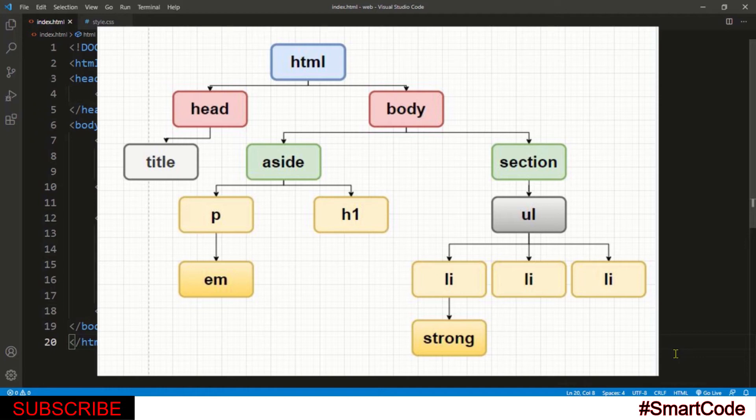Now focus just on the aside tag at the moment. Does aside have children? Yes, the paragraph and the h1 tag inside the aside tag are children as they are directly descendant from the parent. And notice here the paragraph tag. This paragraph has a children of its own, an em tag.